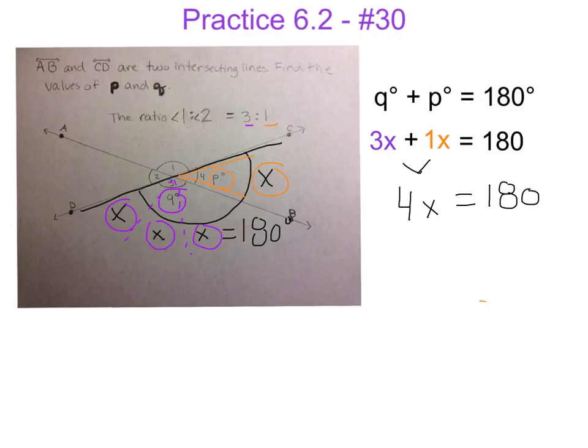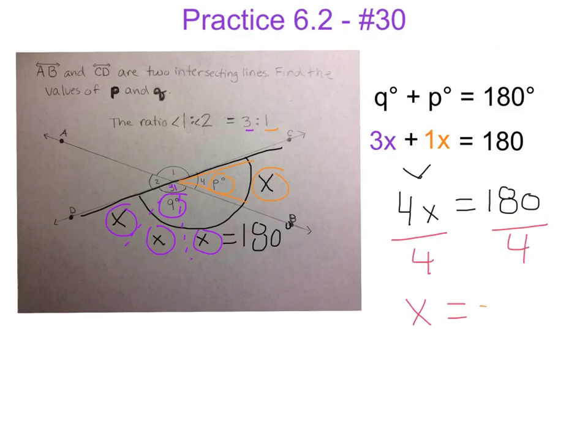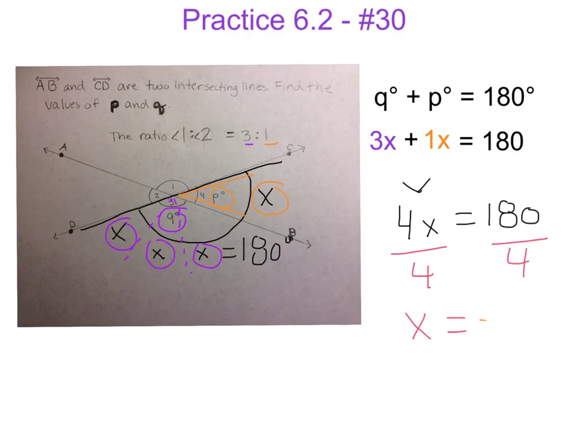That's just reminding us that p plus q is equal to 180 degrees. Now we've created a one-step equation. So all we need to do is divide both sides by 4 to get our variable x alone. Thus, x is equal to 45.